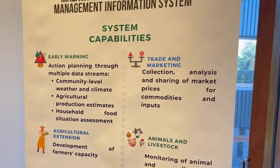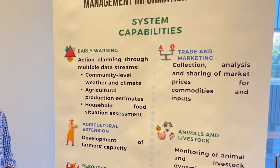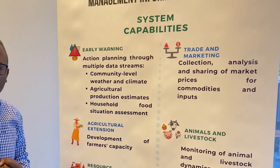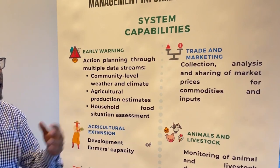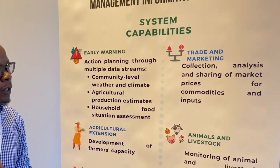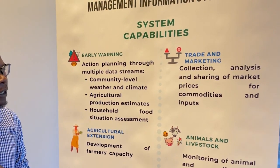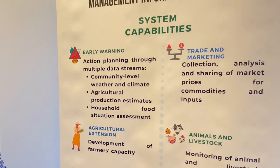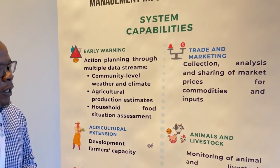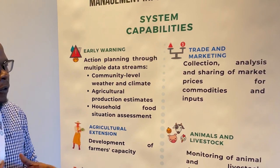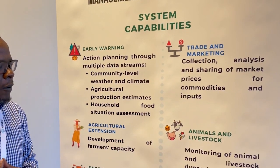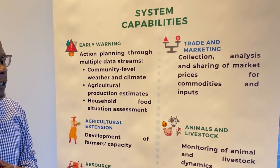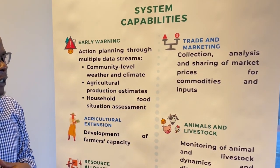There is a trade and marketing component. Here we are mainly looking at collection, analysis, and dissemination of data on commodity prices as well as prices of inputs. Designated government workers called enumerators go to markets and collect data on a weekly basis. They sample multiple sellers, get an average price for a commodity, and report on that. They also follow fertilizers and other agricultural inputs, providing a basis for monitoring changes in prices and the possible impacts on livelihoods and agricultural activities.